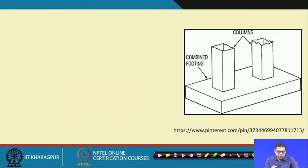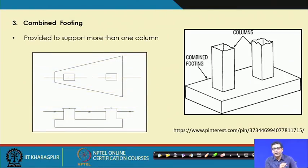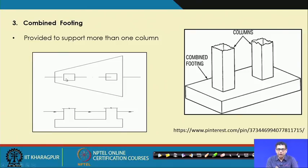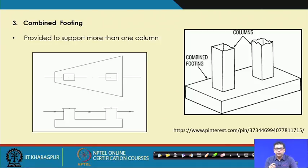The next one is the combined footing. When we provide a footing for more than one column, that is called a combined footing. Here a combined footing is provided for two columns. It can be of different shapes — triangular, rectangular, or trapezoidal — depending on site requirements.